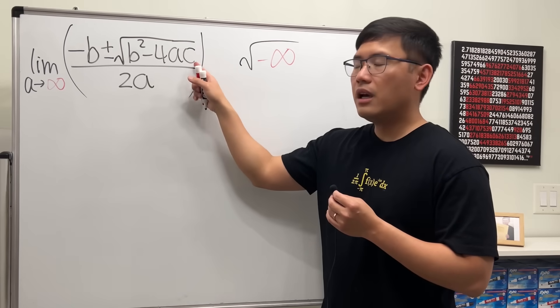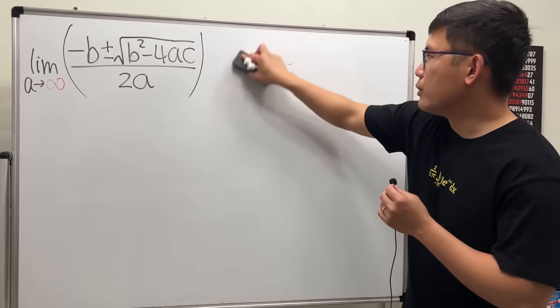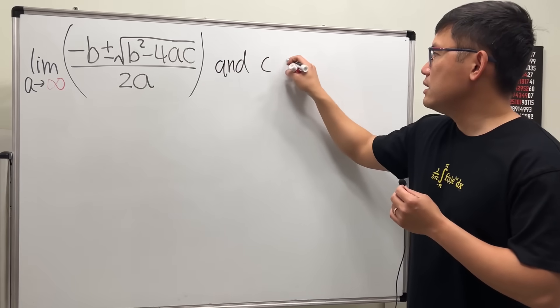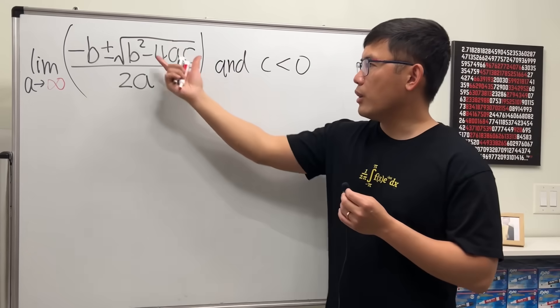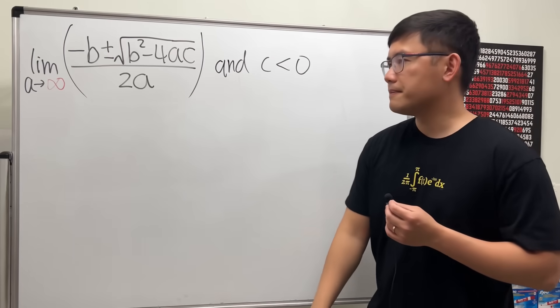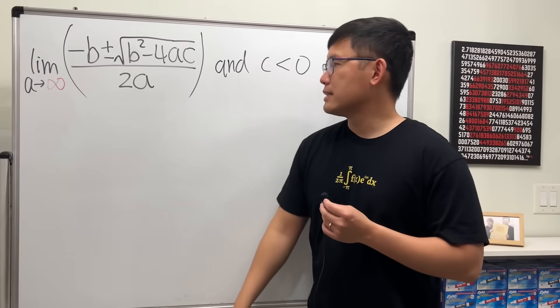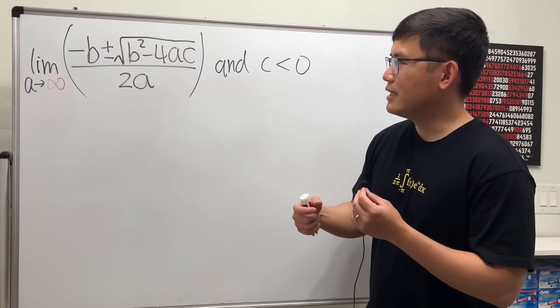So what do we do? Don't worry about it because we can still have c. I'm just going to impose the condition that c is less than zero, so that the whole thing inside will be positive infinity and keep things real. Anyway, the answer to this is zero, but let's see how I'm going to make it slightly more legitimate to show you the work.